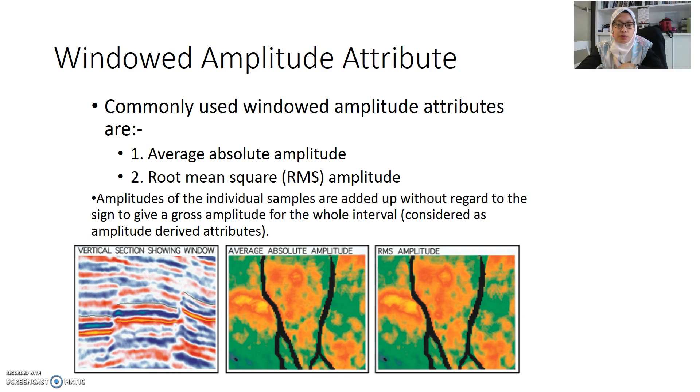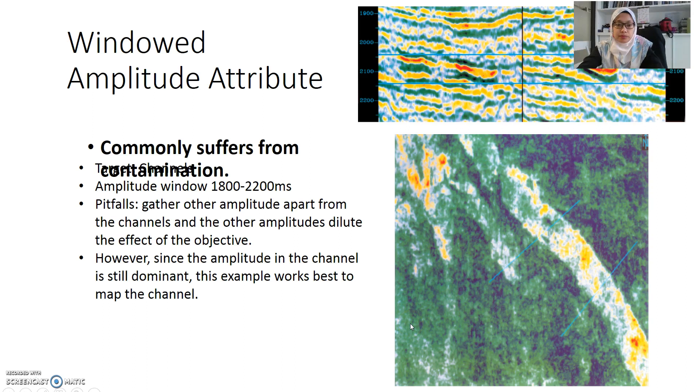But basically we can see slight changes in this zone and in this zone. Apart from this, the yellow color in this average absolute amplitude comparing to the RMS amplitude is slightly different. The changes are very little but it might be useful in predicting the size of your reservoir or the size of your potential hydrocarbon. Amplitude of the individual samples are added up within this range so it will give a sign of gross amplitude for the whole interval.